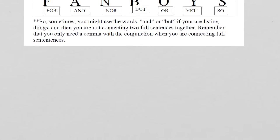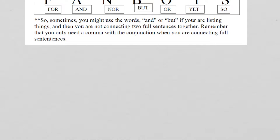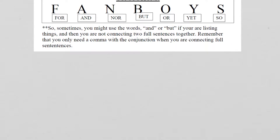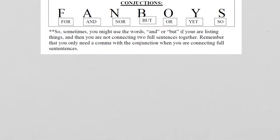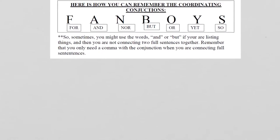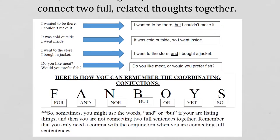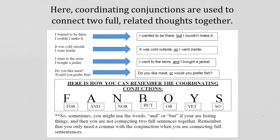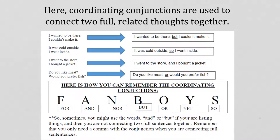As I mentioned, sometimes you use conjunctions in lists — like 'and,' 'but,' or 'or.' For example: 'Would you like to go swimming, run across the beach, or see a movie?' You can use some conjunctions to list things. But what we're concerned with here is how we use conjunctions to connect two full related thoughts together.